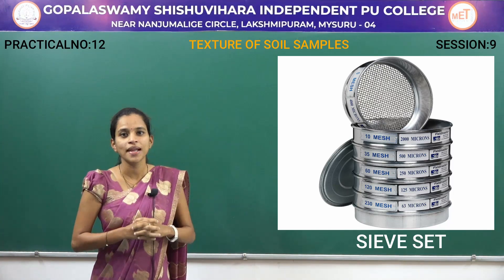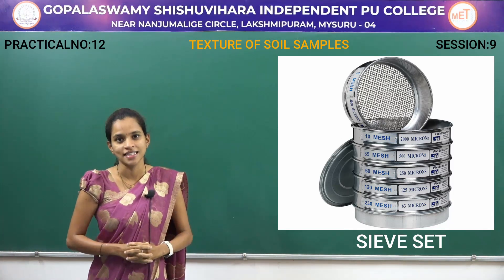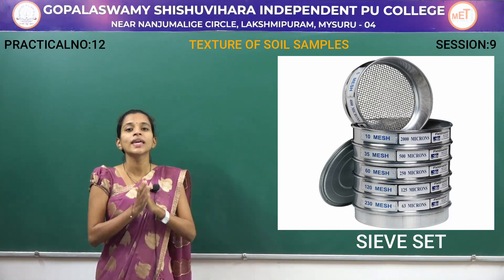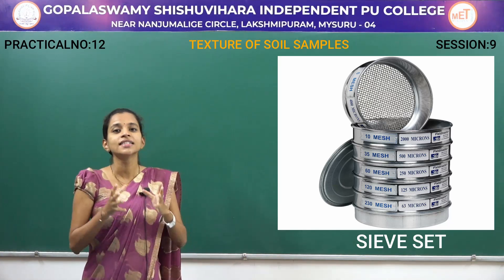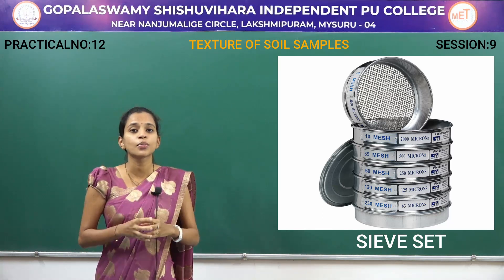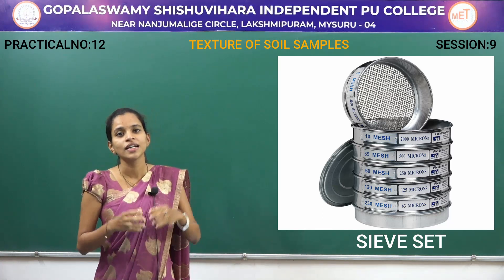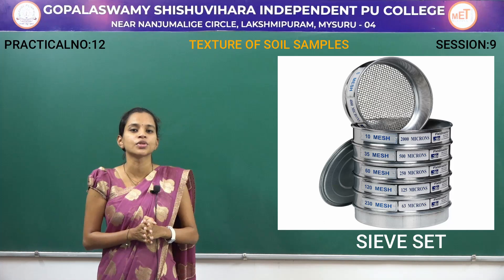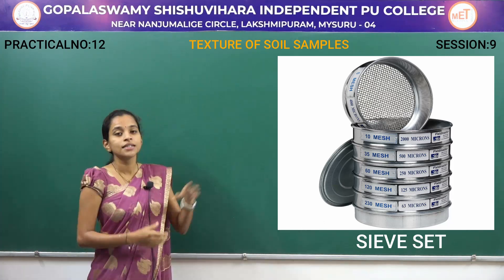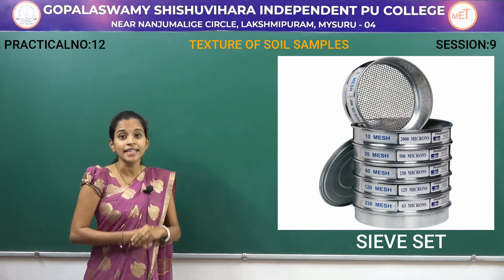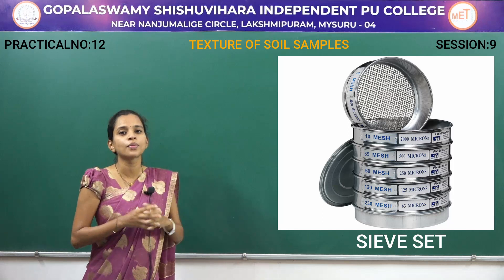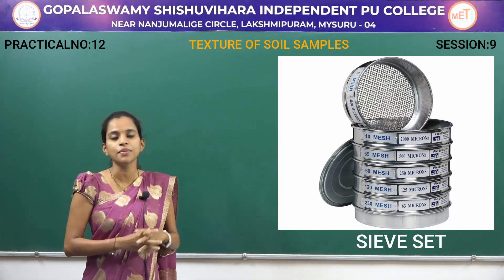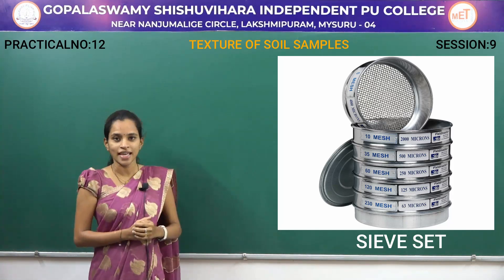Once it is done, place it as it is. The reason for separating them is we can easily identify what proportion of silt, what proportion of sand, and what proportion of clay is present. The sieve tube helps us get the proper proportion of clay, silt, and sand in a particular soil sample.